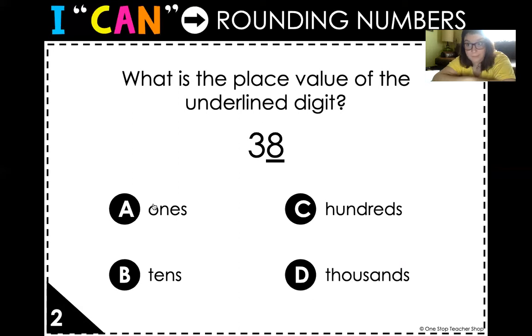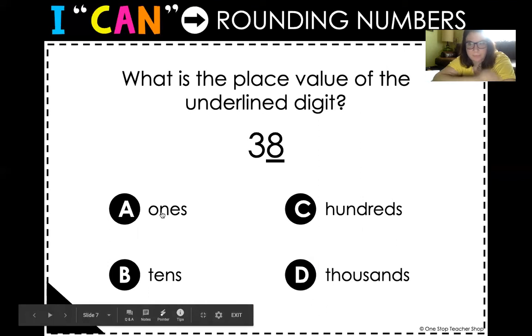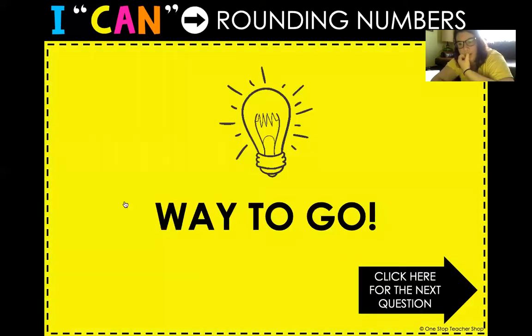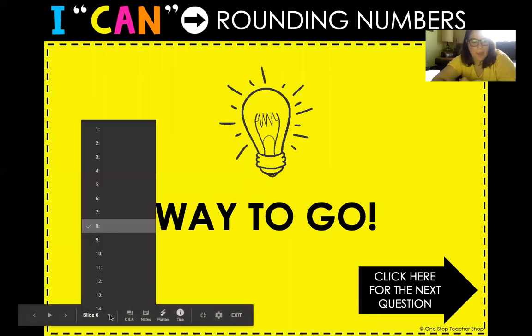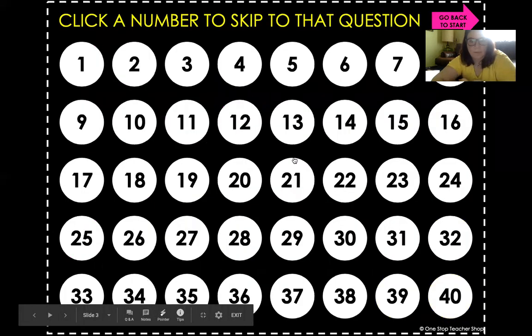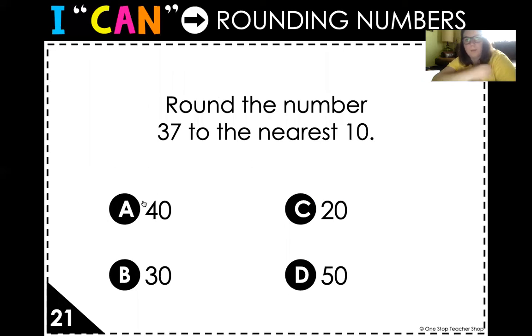Click here for the next question. All right. What is the place value of the underlying digit? That is our ones place. I click on A. Way to go. We got it. All right. I'm going to go back to the one. Let's go down here. What's the question? All right. Here we go. Round the number 37 to the nearest 10.